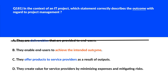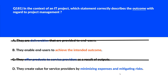Option B: outcomes enable service consumers to achieve the intended result, focusing on the ultimate benefit of a project — we'll park this. Option C says they offer products to service providers as a result of outputs; this is focused on transfer to service providers, not outcomes, so it's out. Option D says they create value for service providers by minimizing expenses and mitigating risk. While co-creating value is important, reducing cost and risk doesn't solely define outcomes — we'll reject this.